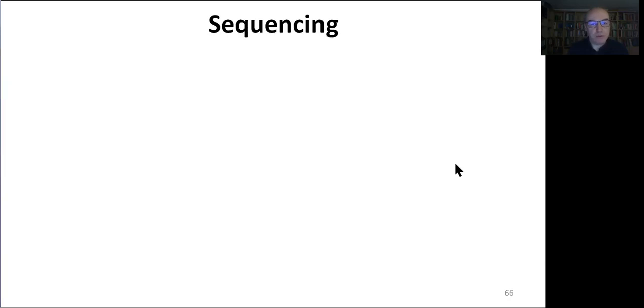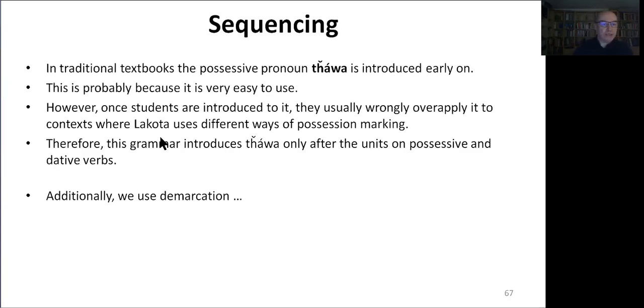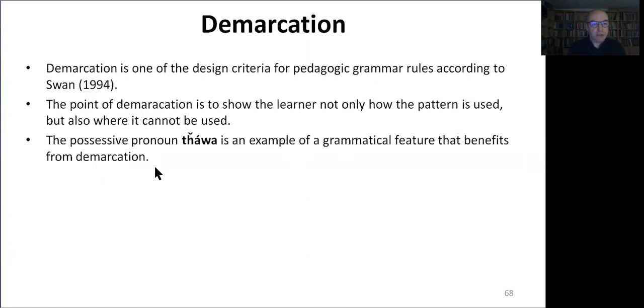But I do want to mention something about sequencing. For example, in traditional textbooks the possessive pronoun is introduced early on, and this is probably because it is very easy to teach and very easy to use. But once students are introduced to this pronoun they usually over-apply it to contexts where Lakota uses different ways of possession marking. Therefore in this grammar we introduce schna only after the units on possessive and dative verbs. Connected to that is the idea of demarcation, which is one of the design criteria for pedagogical grammar rules according to Swann.